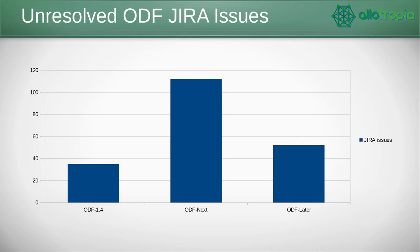What is still left to do? We have about 35 issues targeted at ODF 1.4 which have not been resolved yet, and more than 100 issues with the target 'ODF next,' meaning they are basically ready to be discussed by the committee. Additionally there are maybe 50 with 'ODF later,' meaning they will only be discussed if there is nothing more important. Since we want to be more agile, having a target of ODF 1.4 doesn't guarantee an issue will get in — there will probably be a time-based cutoff at some point.